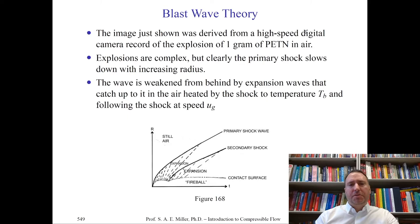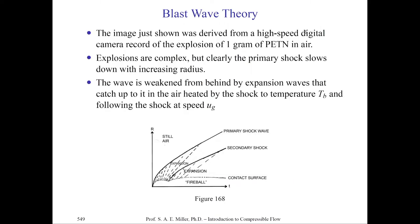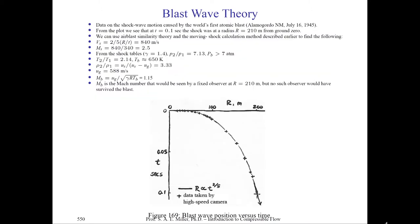This image was derived by PETN in air — a single gram — recorded with a high-speed digital camera. These explosions are extremely complex, involving multiple shock waves, expansion waves, turbulence, and all the chemistry of the highly energetic combustion exothermic reaction. You can see the primary shock slows down with increasing radius and might be viewed as a constant-speed shock at high radius. Figure 166 is Gary Settle's diagram of this particular experiment.